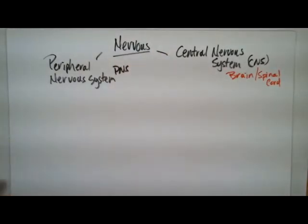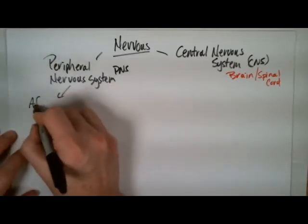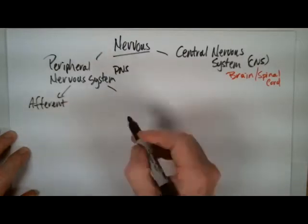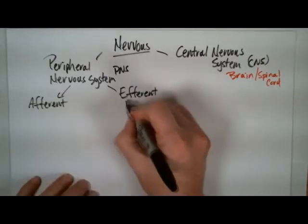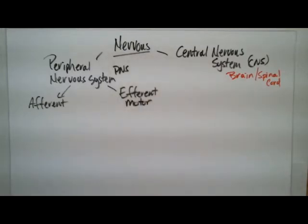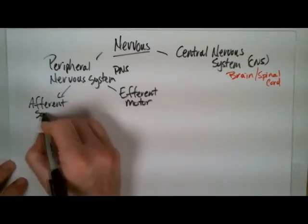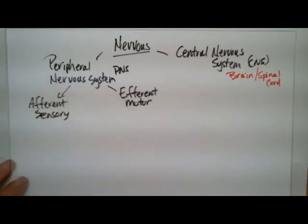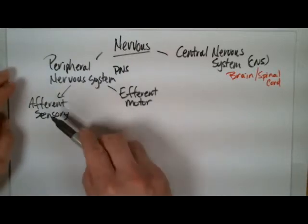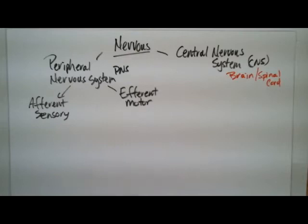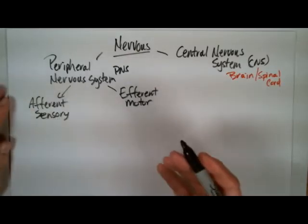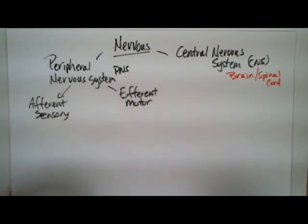The PNS has an afferent division and an efferent division. The efferent is the motor side — things that affect a muscle. The afferent is your sensory side; it carries signals coming into the central nervous system. So the afferent sends signals to the CNS, while the efferent takes signals away from the CNS. This covers your somatic afferent parts — the body — and your visceral, meaning basically your internal organs.